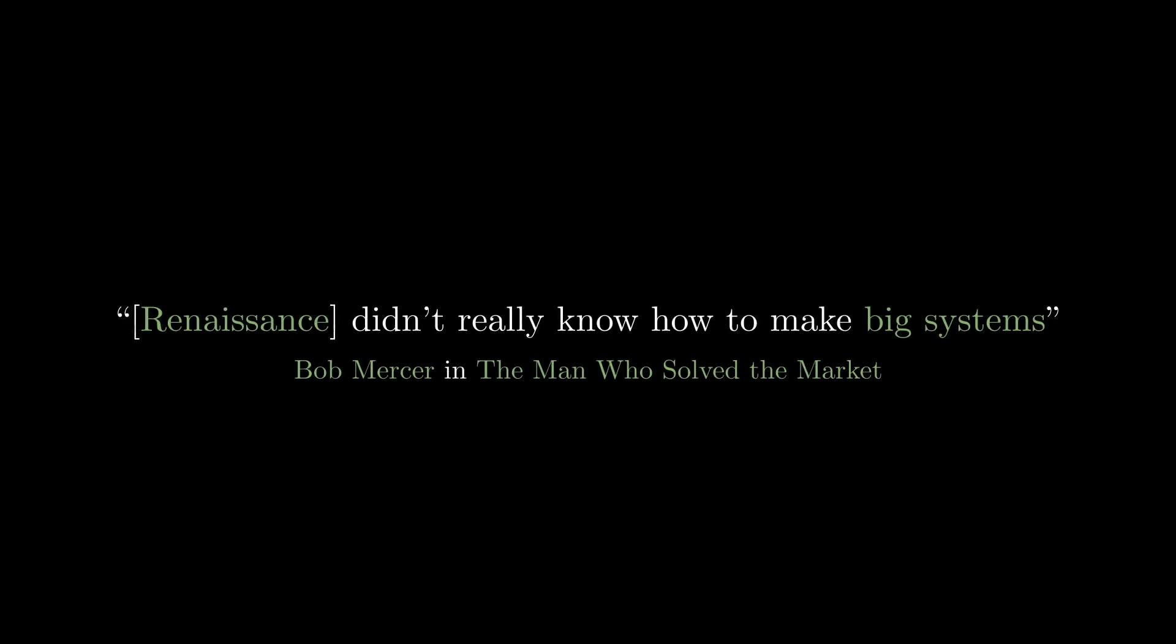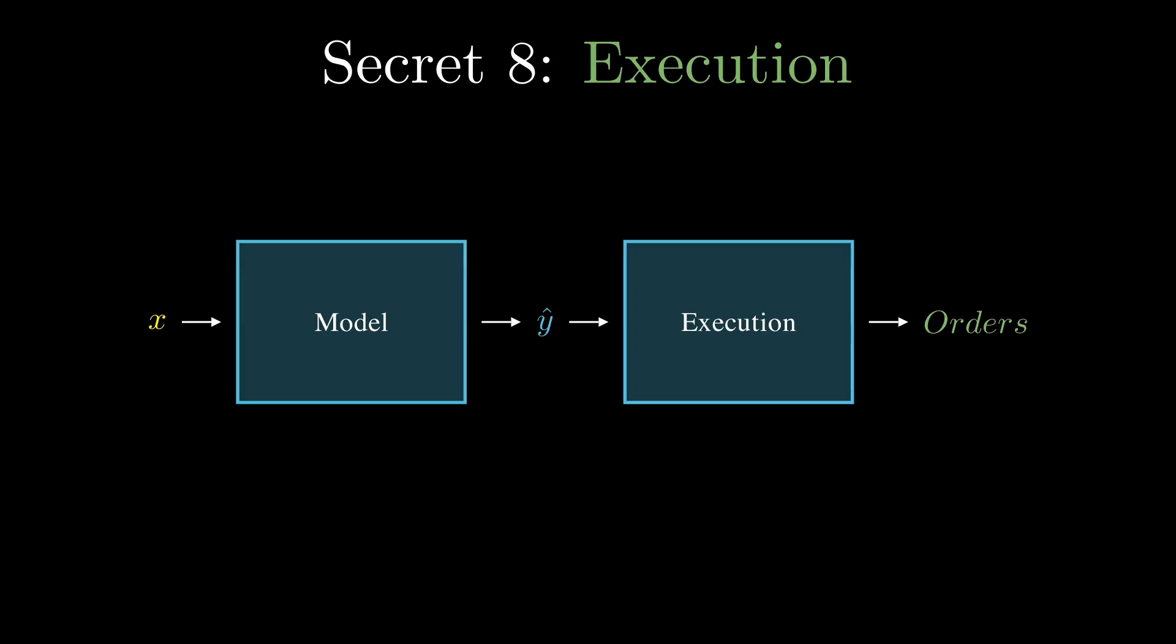The eighth secret is that they have excellent execution, thanks to the IBM people they recruited. Before they joined, the equity system had good models but poor execution because the software was poorly built. Execution is what takes the model's prediction and actually sends the orders. This is a key lesson: even the best model is useless without good execution. You can think of returns as the edge multiplied by execution. If execution is below par, it can wipe out the edge and lead to poor returns.